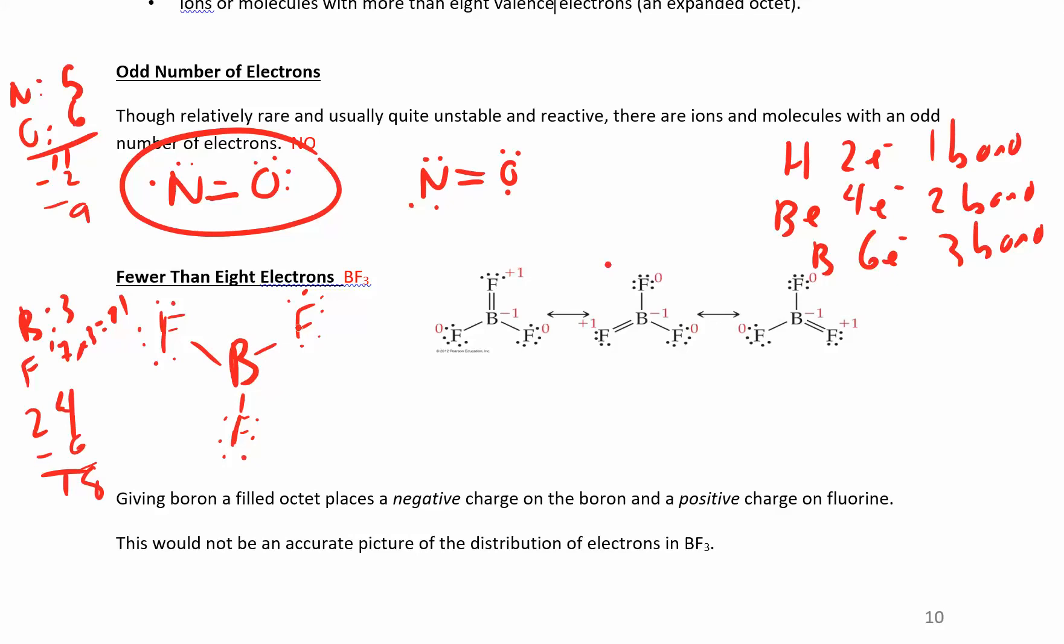So if you look at the formal charges on this first structure that we drew, boron has three valence electrons, three lines, no dots. He's zero. And each one of those fluorines, fluorine has seven valence electrons minus one line minus six dots gives us zero. So zero all the way around. And so that's actually a pretty favorable structure. So it just happens that boron is happy having just three bonds or six electrons around it.